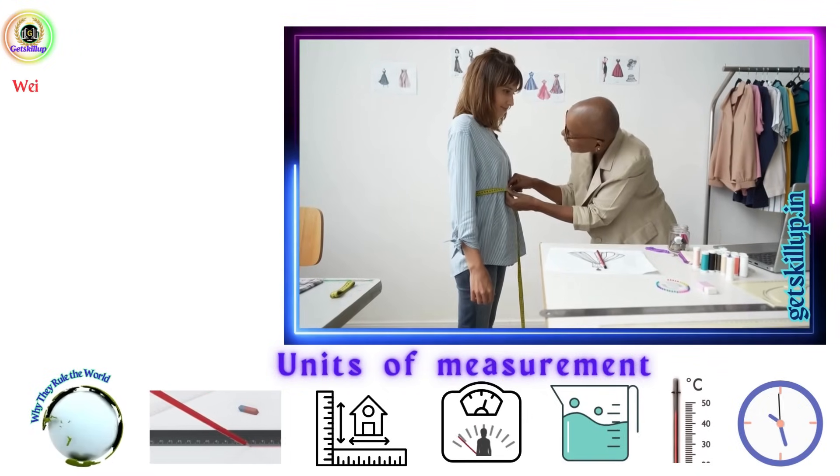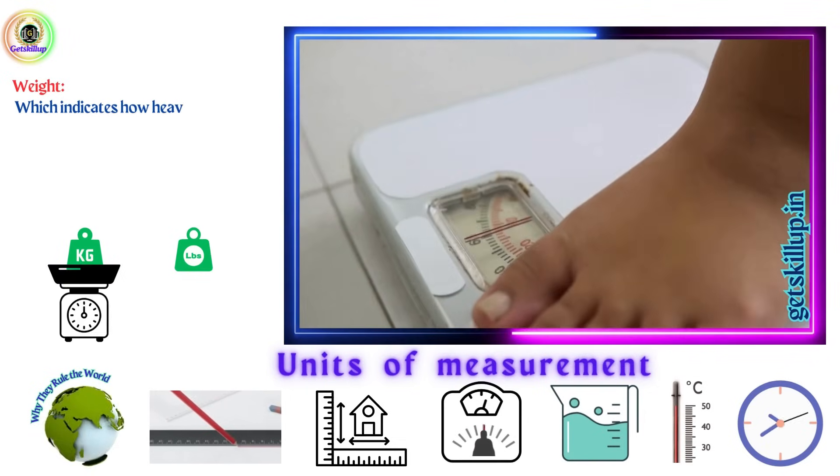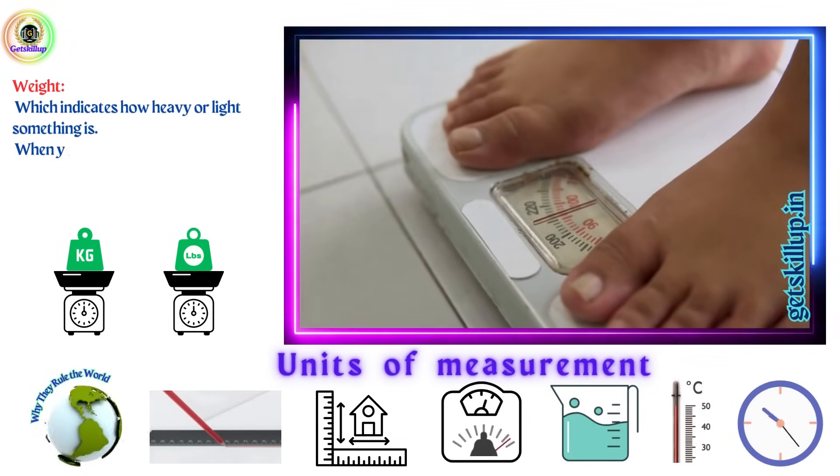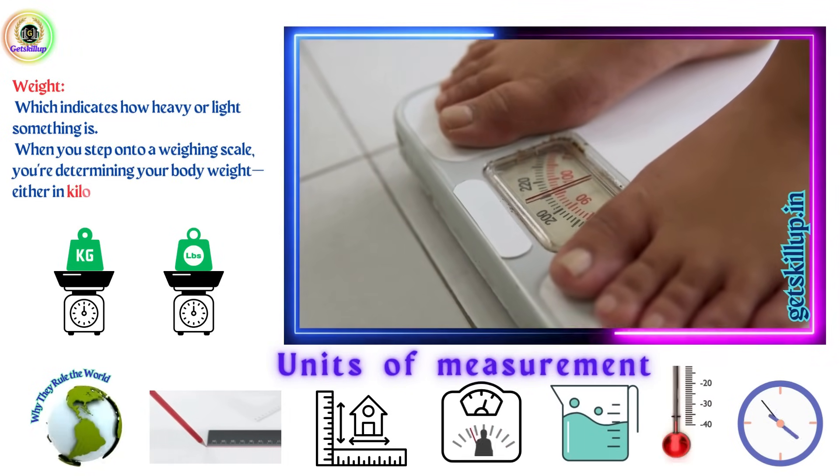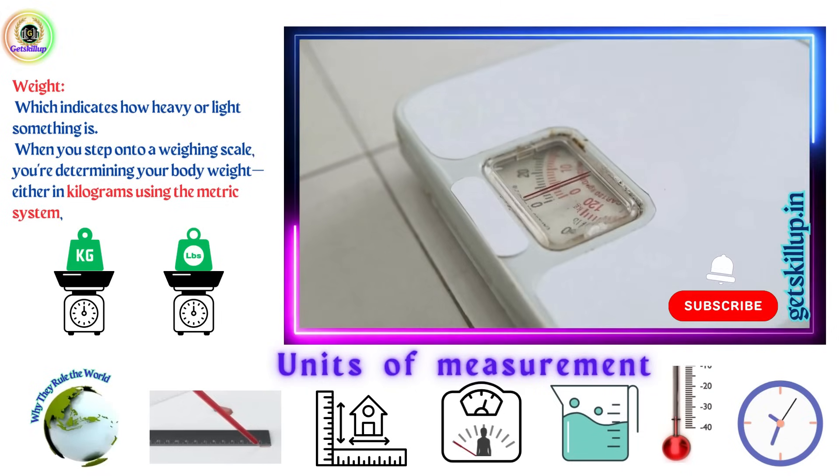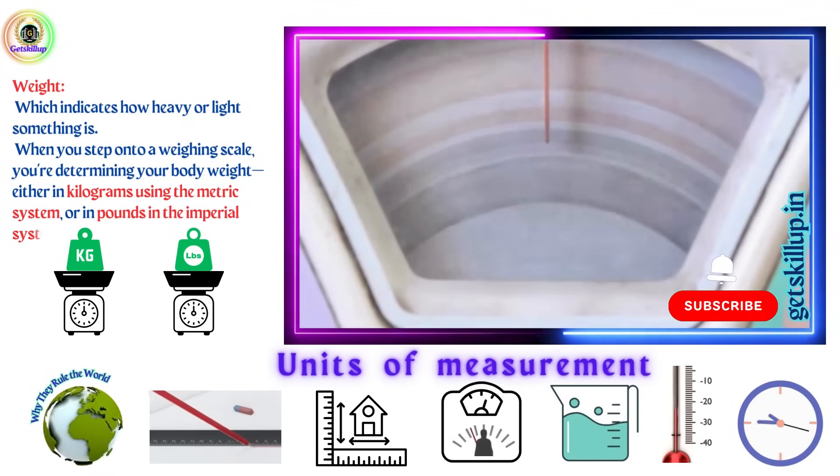Another important measurement is weight, which indicates how heavy or light something is. When you step onto a weighing scale, you are determining your body weight, either in kilograms using the metric system, or in pounds in the imperial system.